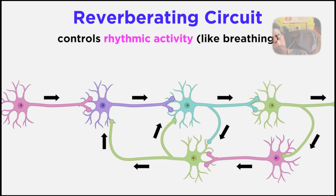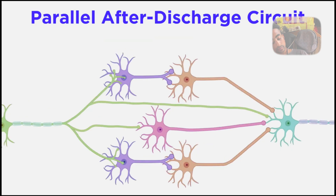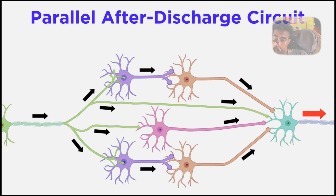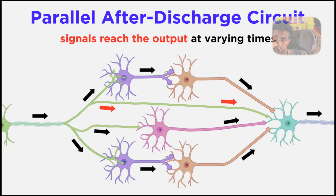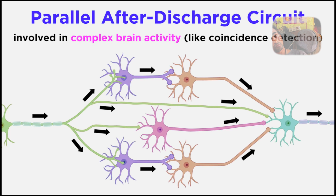Reverberating circuits control rhythmic activity like breathing as well as repetitive actions like walking. Lastly, we have a parallel after-discharge circuit: an input diverges into parallel arrays that then converge on a single output. There is variance in the time required for each signal, so a burst of multiple impulses is produced. These are involved in more complex brain activity like coincidence detection.